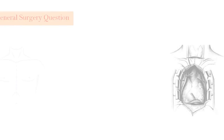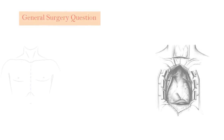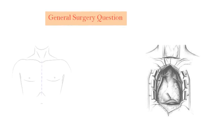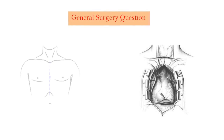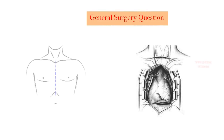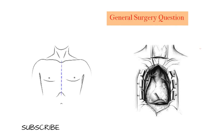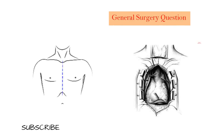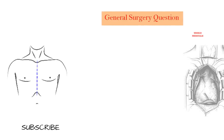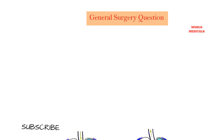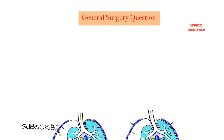For this patient, thoracotomy would be the best option. Typical injuries include ventricular penetration, great vessel disruption, and hilar lung injuries. This scenario represents one of the common indications for an emergency room thoracotomy.